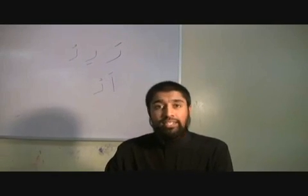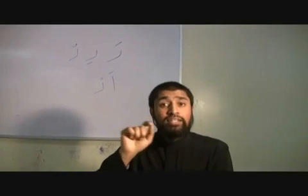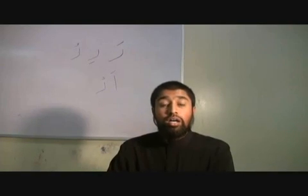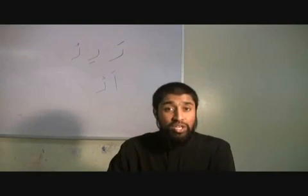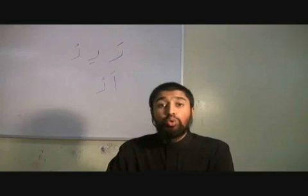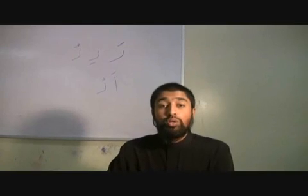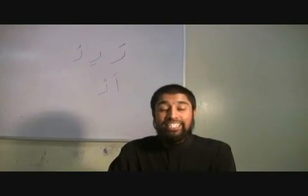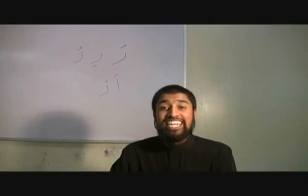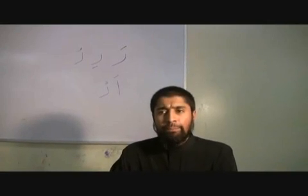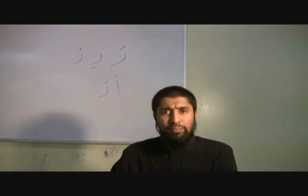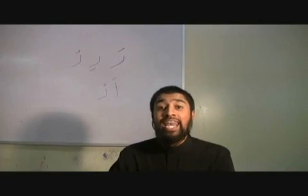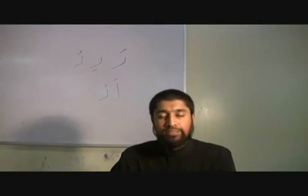Ra with something on the top — a line on the top, Fatha, Zabr, line on top: Ra. Ra with a U, with a Pesh, with a Dhamma: Ru. Ra with a line on the bottom: Ri. Shaddin. Is Ra basically heavy when you put an A or a U or an An or an Un on top of it? Yes.